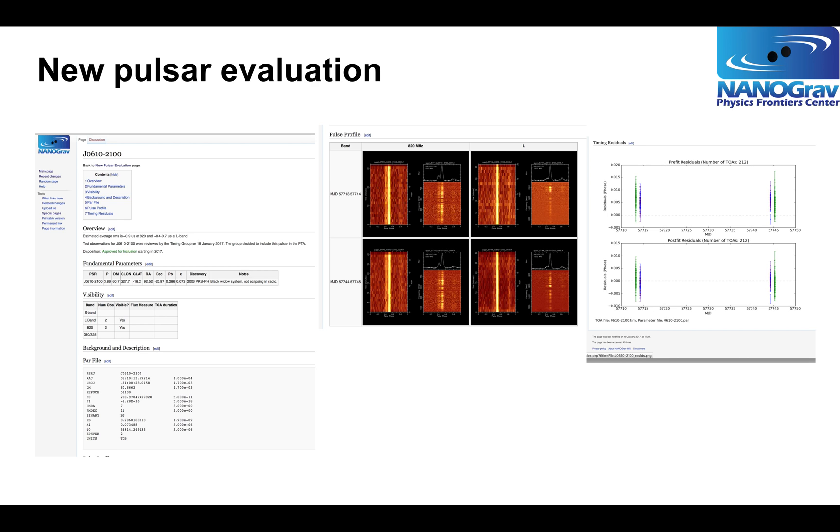The timing group also does evaluation of new pulsars. We're continually keeping abreast of discoveries of new pulsars, and occasionally also checking back on pulsars that had been rejected when we had narrower bandwidth systems. When we have a pulsar that might be of interest, we time it for several epochs at Green Bank or Arecibo. We check on how precise the timing is, and if it's better than about one microsecond, then we will add it to the NANOGrav program. This slide is showing a picture of a wiki page showing the evaluation information for one pulsar that we had tested over this past year.